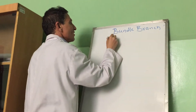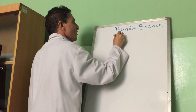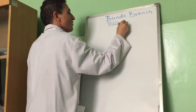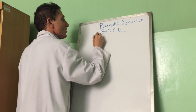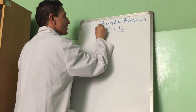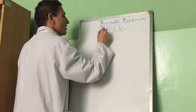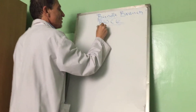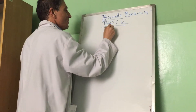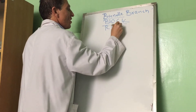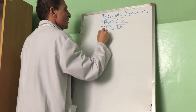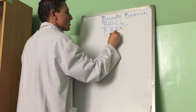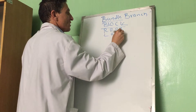Bundle branch block — right bundle branch block (RBBB) and left bundle branch block (LBBB).